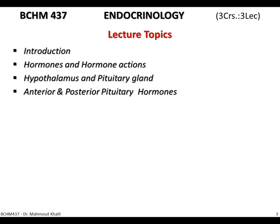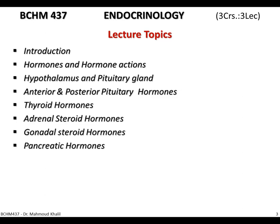We'll start with an introduction, then go through hormones and hormone action. We'll cover the first two glands: the pituitary gland, which is the major gland, and the hypothalamus, which controls it. The pituitary gland is divided into three parts, but the two parts that secrete hormones are the anterior and posterior pituitary. Then we'll go through thyroid hormones, adrenal steroid hormones, gonadal steroid hormones, and pancreatic hormones.